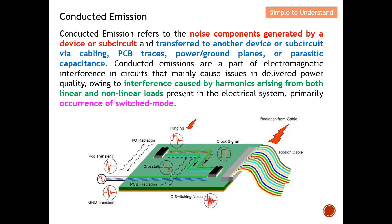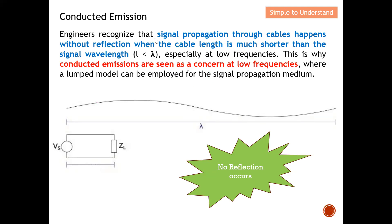Conducted emission is a part of electromagnetic interference in circuits that mainly causes issues in power quality due to interference from harmonics arising from both linear and non-linear loads present in the electrical system. Nowadays most circuits have switch mode supplies or clocks, which are all potential noise sources for conducted emission. Engineers recognize that signal propagation through cables happens without reflection when the cable length is much shorter than the signal wavelength, which means the signal is at low frequency with a large wavelength.